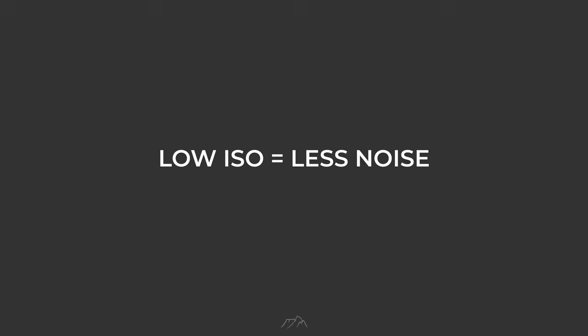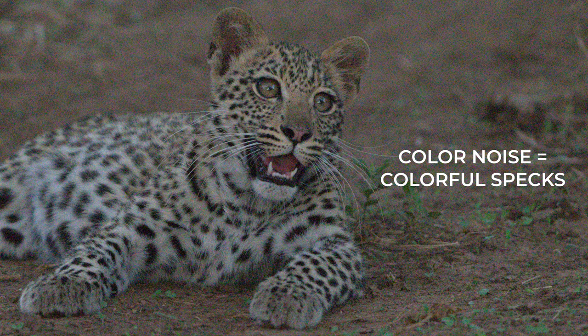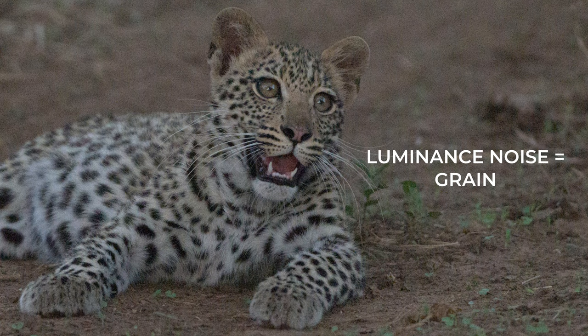Low ISO settings result in less noise, whereas high ISO settings can introduce significant noise, detracting from image quality by reducing dynamic range, sharpness, and introducing graininess. Image noise appears in two ways: as color noise and luminance noise. Color noise appears as random colorful specks across an image, while luminance noise essentially creates a grainy appearance throughout the image.